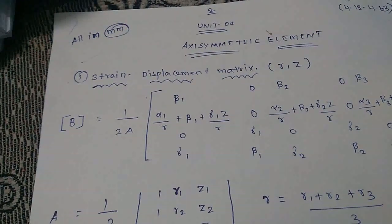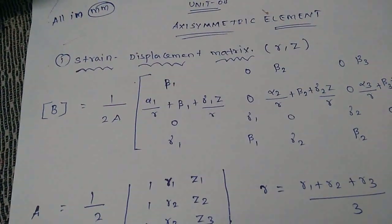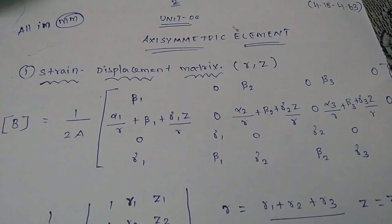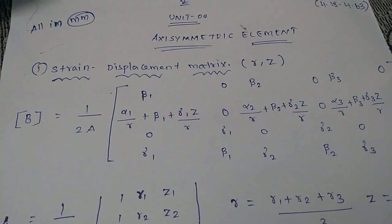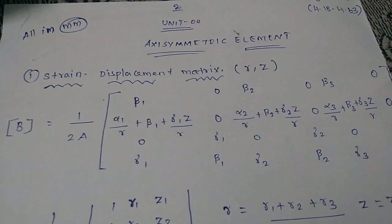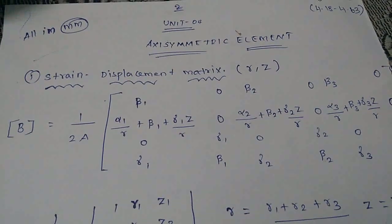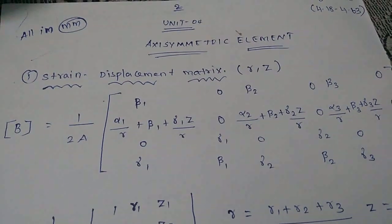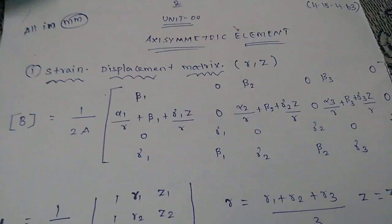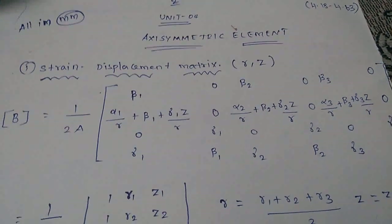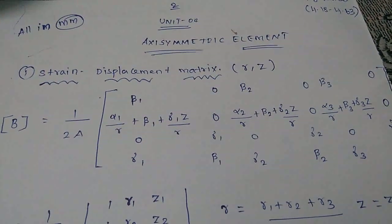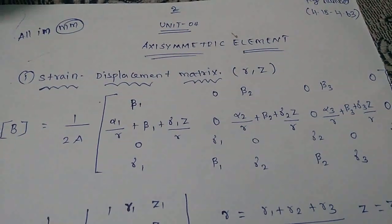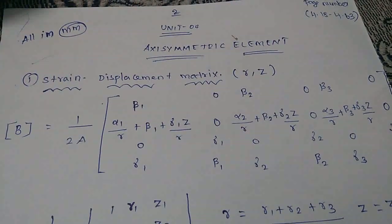The first method is the strain-displacement method. This method uses a formula. The formula involves beta 1, 0, beta 2, 0, beta 3, 0. The matrix is multiplied by 1 by 2A.